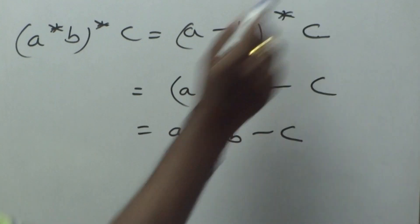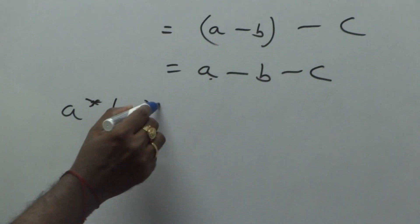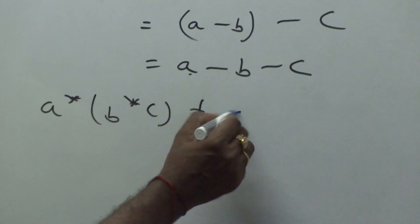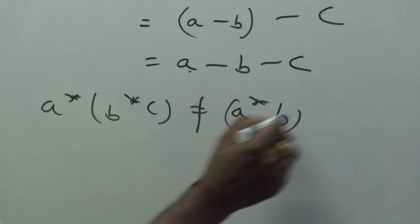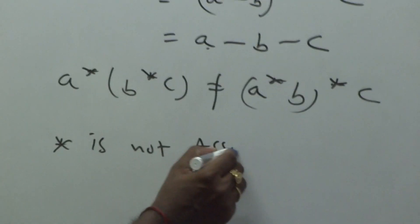Observe these two. This is A minus B plus C. This is A minus B minus C. So A star B star C is not equal to A star B star C. Star is not associative.